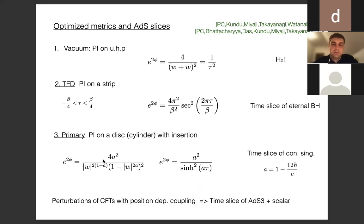We can also do this for primary states: the path integral that prepares a primary state inserts a primary operator at the center of a disk. The solution of the Liouville equation is a conical singularity geometry, where the parameter a = 1 - 12h/c corresponds to the dimension h of the primary operator. One interesting observation is that these 2D metrics correspond to particular time slices of 3D AdS geometries dual to these particular states.